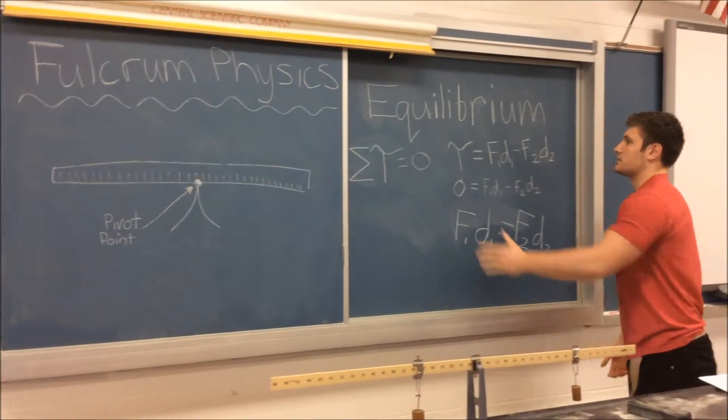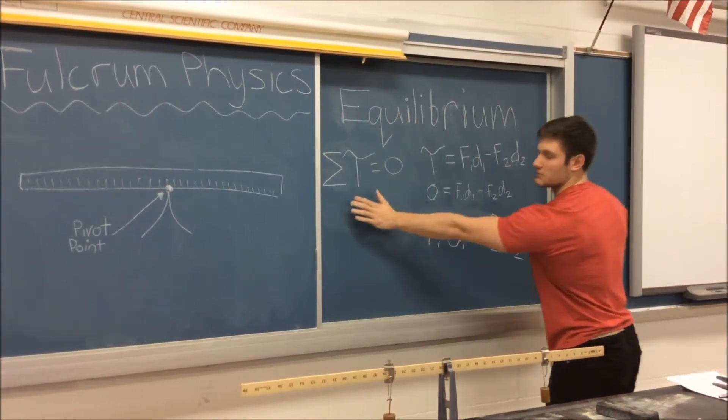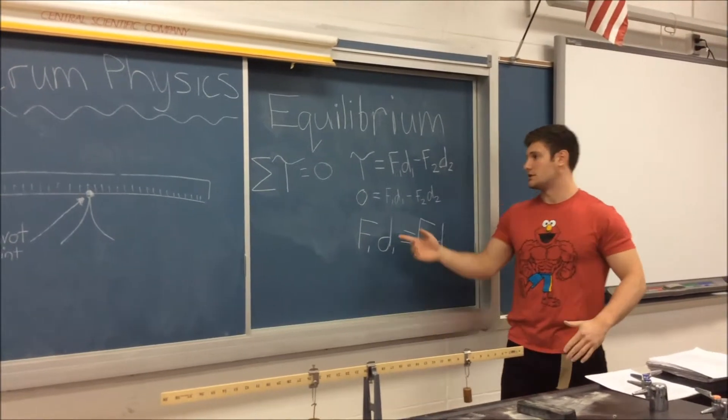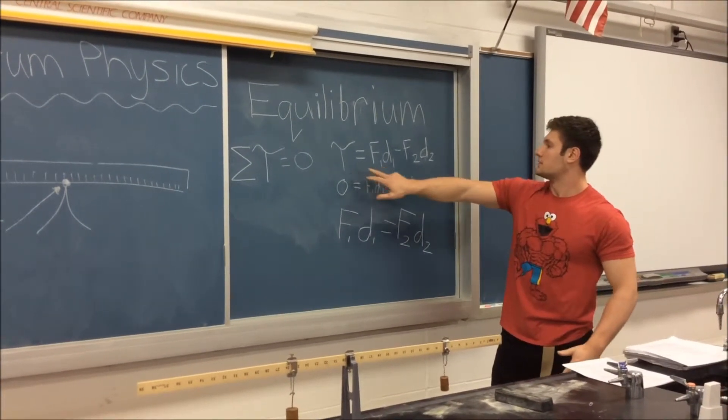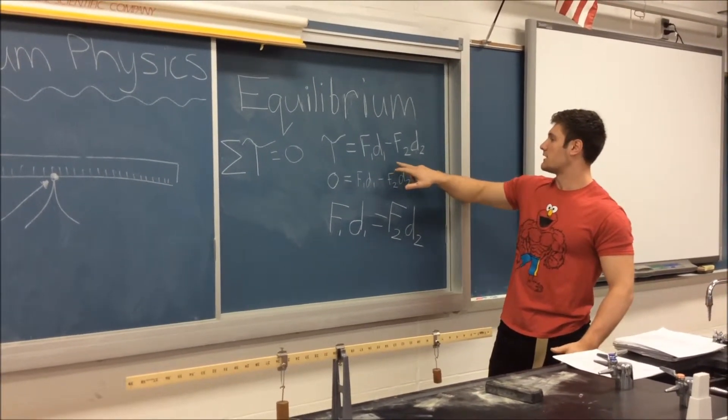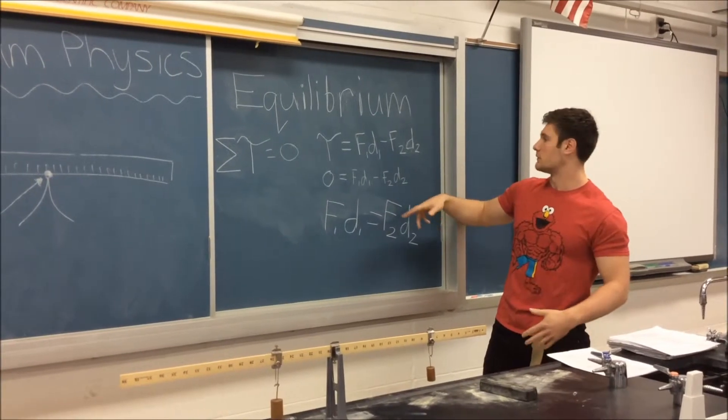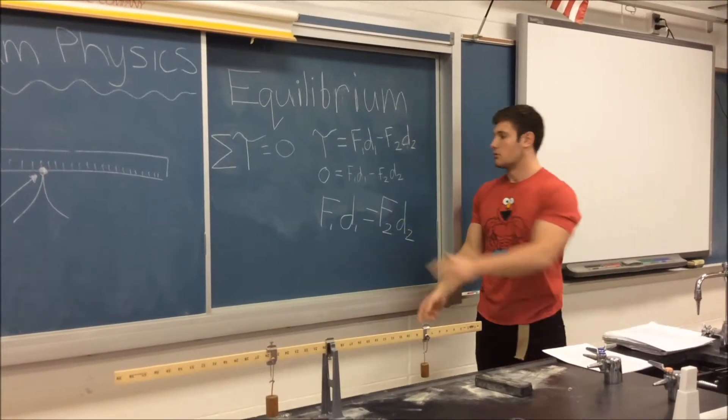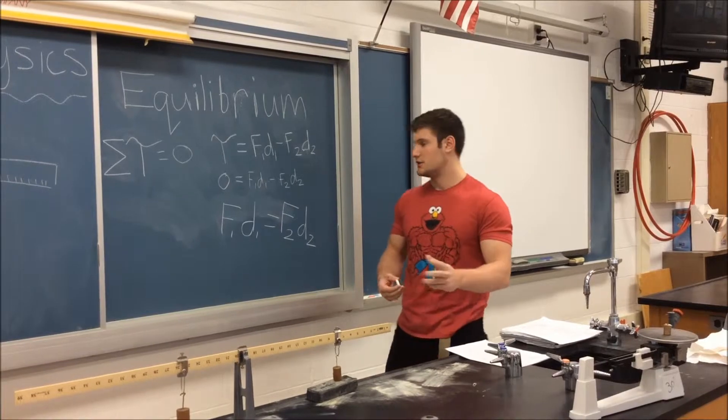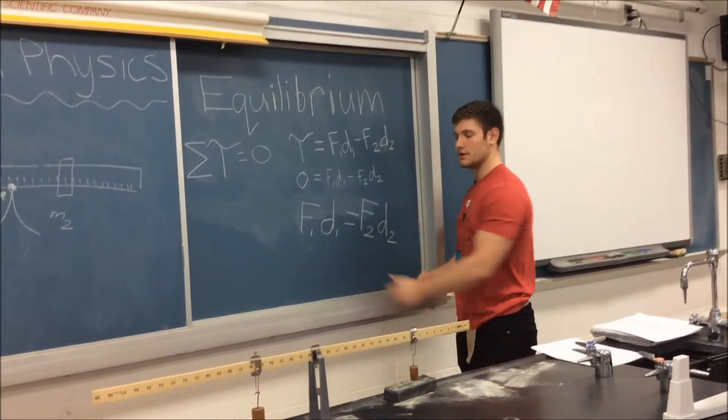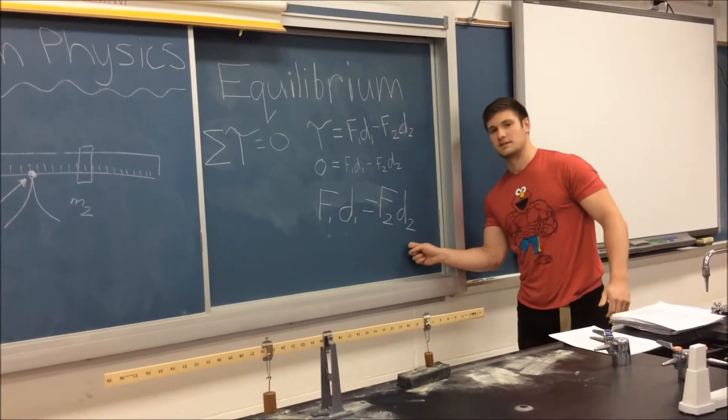Now we can see why. It's because equilibrium is equal to the summation of torque when it's equal to zero. Torque is equal to force times distance minus force times distance with their respective forces and distances. So when you plug in zero to that, you can see that F1 times D1 is equal to F2 times D2.